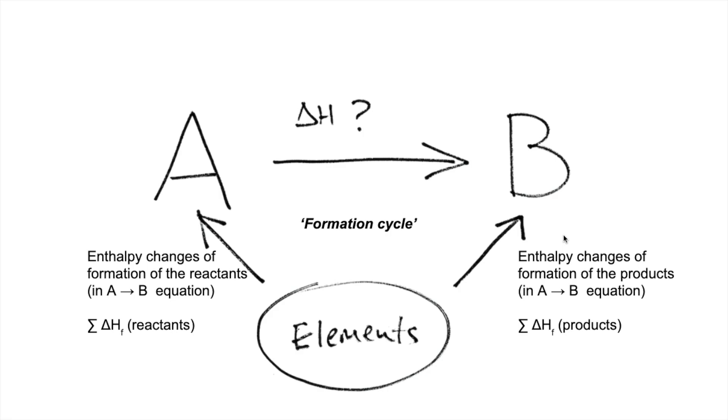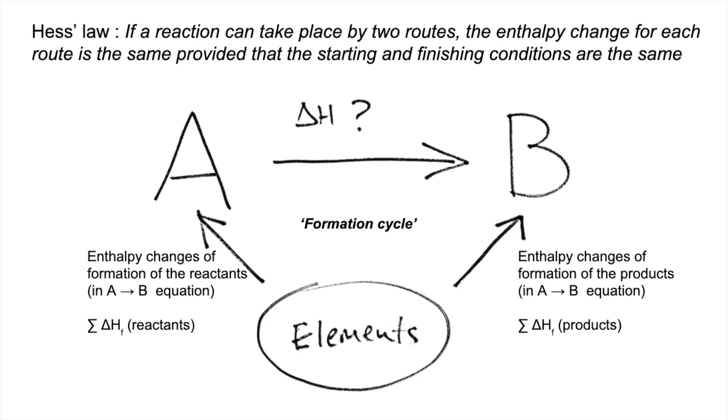So we'll bring Hess's Law in now. Hess's Law states that if a reaction can take place by two routes, the enthalpy change for each route is the same, provided that the starting and finishing conditions are the same.